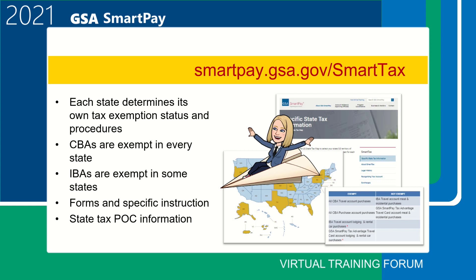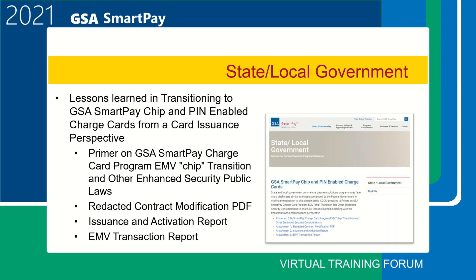Just click on the state where you are traveling to or purchasing from to find out how they handle state taxes. A table will pop up where you can see what is exempt and not exempt. In the example on the slide, I've chosen Massachusetts. In this example, IBA travel account lodging and rental car purchases are exempt. At this time, state and local governments are not authorized to utilize the GSA SmartPay contract.